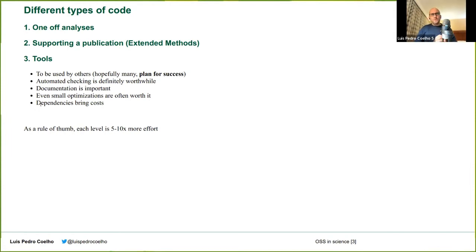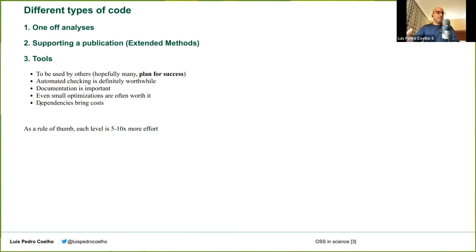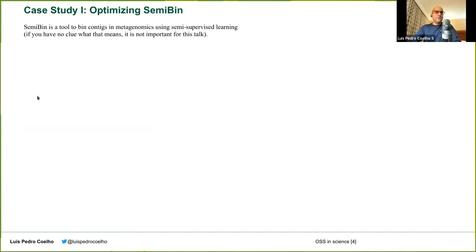A lot of people here will have code mostly in groups one and two. Sometimes it's good to know about all of the infrastructure you'll hear about, but maybe it's not worth it for your project — good enough is good enough. If the code runs slowly but runs in time for you to finish your PhD, maybe that's what you need. I'll be illustrating with a couple of examples from my own work. We've been working on SemiBin, which is a tool to bin contigs in metagenomics using semi-supervised learning. Let's just say it's a tool we put out there that we hope people use.